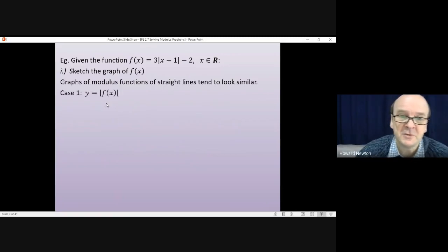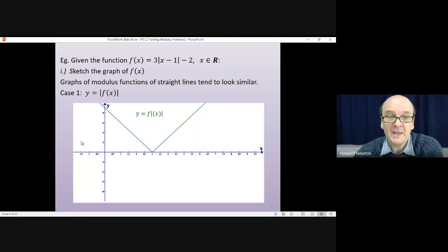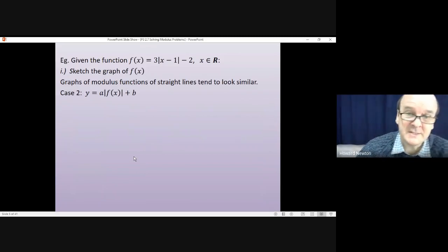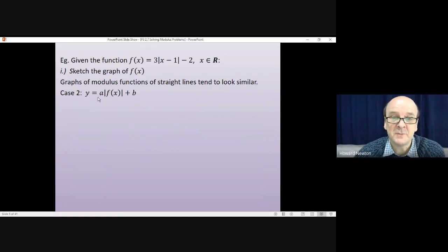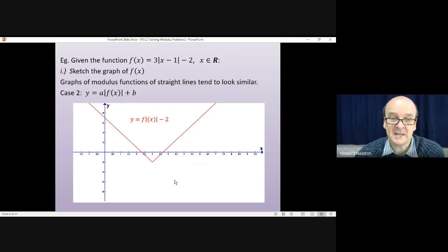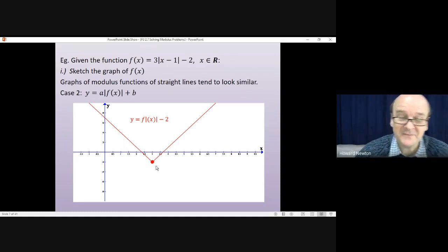Now, graphs of modulus functions of straight lines tend to look similar in the same way that all quadratics look very similar to each other. The first case is the type of function that we met earlier on in this chapter, where you have y equals the modulus of a function. And for the moment, that function is just a straight line function. You have a line that comes down to the x-axis, touches the x-axis, and then heads back up. What we'll be looking at in this lesson is a slight variation of that, where the function could be multiplied by a value and a value could be added. Multiplying by a value doesn't really change its appearance very much, just makes it steeper or less steep. However, this constant that you add on means that the graph can go beneath the x-axis now, or it could be further above the x-axis, up in mid-air, depending on the value of b.